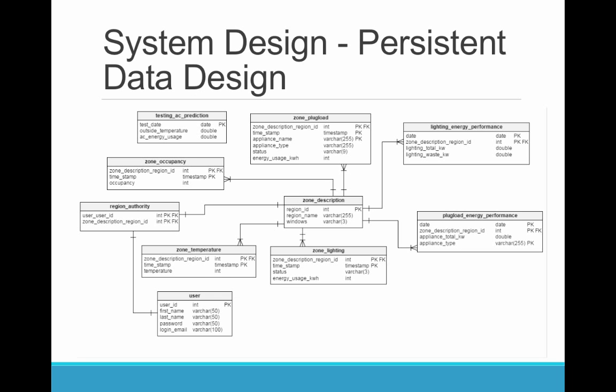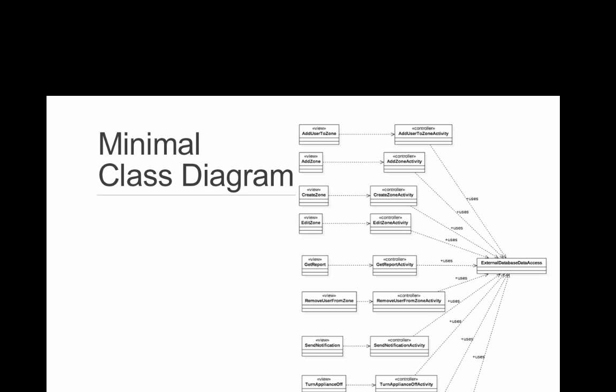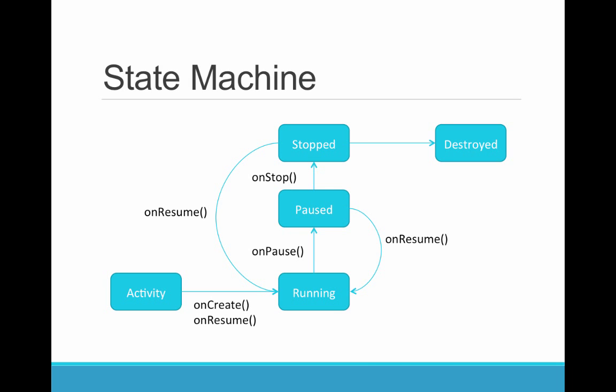This is a representation of our data model. This diagram accurately shows the Model-View-Controller interaction. For example, to add a user to a zone, the facility manager must first interact with the application by clicking on a button. This action then communicates with the controller, which in this case is located within the Add Users to Zone activity. The controller then communicates with the external database. This state machine diagram is a simplistic view of the Android activity lifecycle.